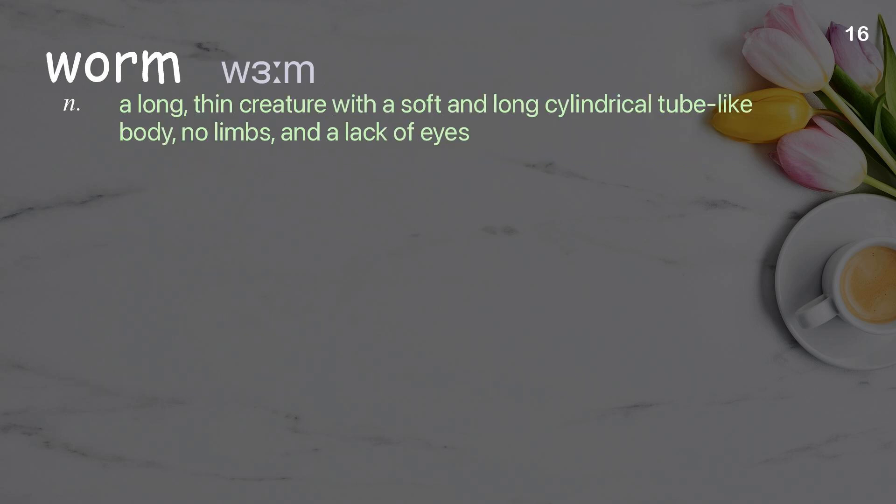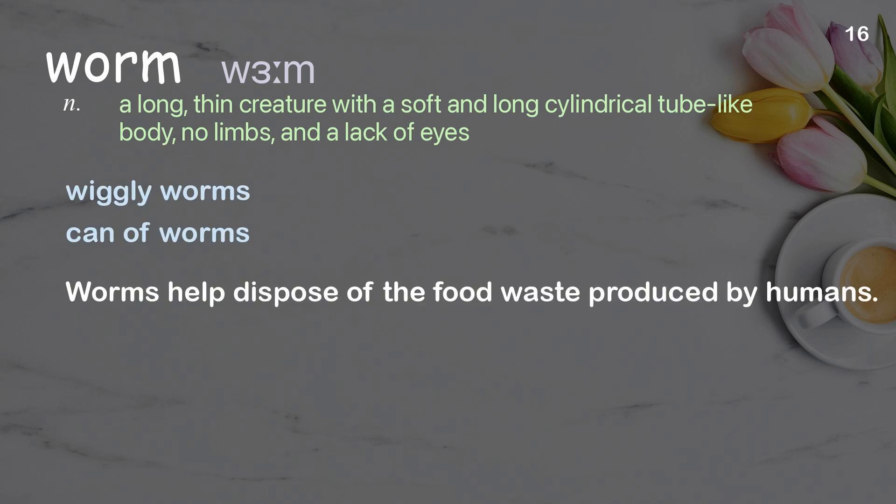Worm: a long, thin creature with a soft and long cylindrical tube-like body, no limbs, and a lack of eyes. Examples: wiggly worms, can of worms. Worms help dispose of the food waste produced by humans.